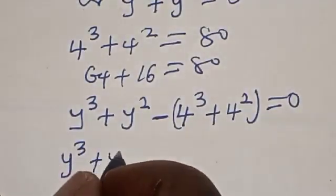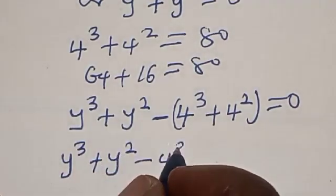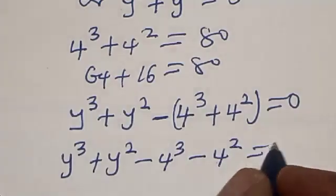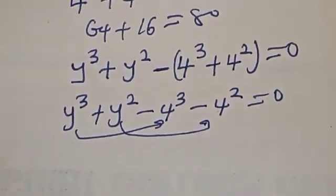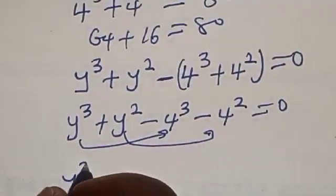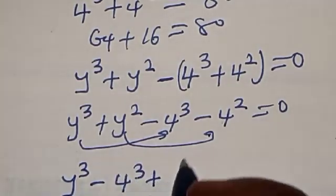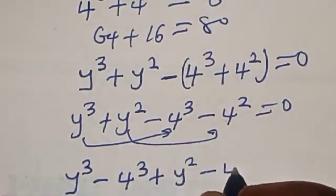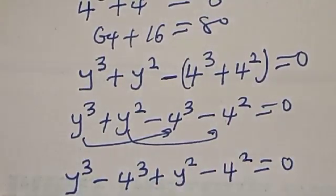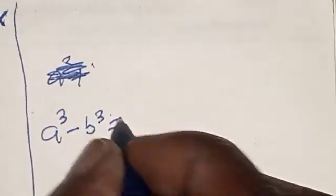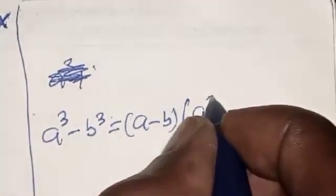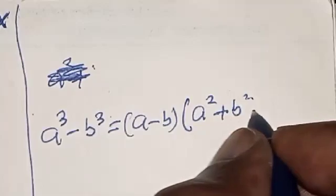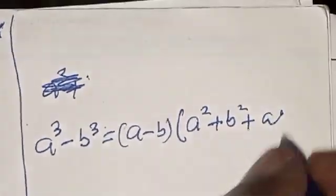Now we have: y^3 minus 4^3 plus y^2 minus 4^2 equals zero. Remember this identity: a raised to power 3 minus b raised to power 3 is equal to (a minus b) times (a squared plus b squared plus ab).